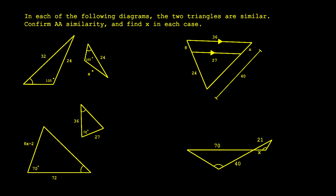In this video we will be doing the following problem: in each of the following diagrams, the two triangles are similar — confirm AA similarity and find X in each case. You will notice that in some diagrams you're given two angles directly, while in others you can find them. In general, for similar triangles you need AA similarity or SAS similarity; in these problems we will be using AA similarity.